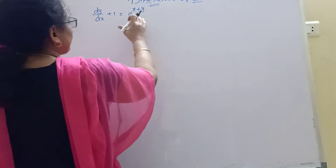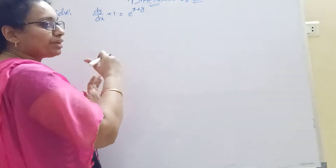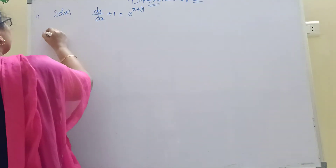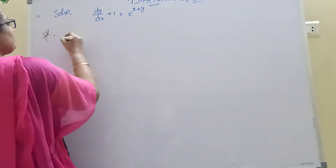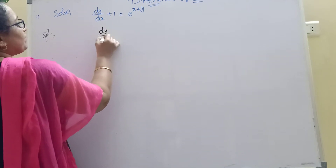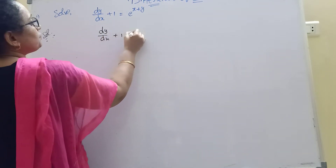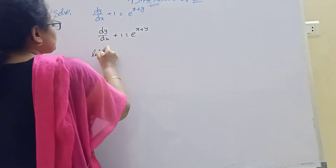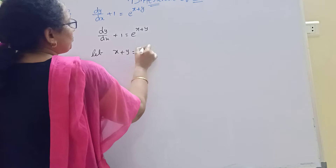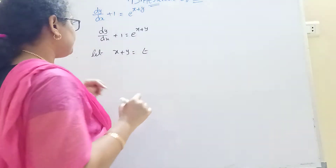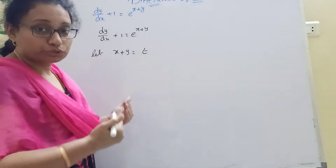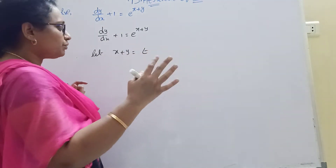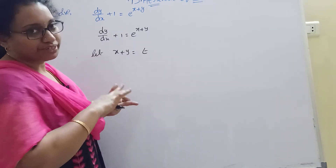Suppose e^(x+y). Let x plus y equal to another variable t, so e^(x+y) equals t. We substitute e^(x+y) equal to t.